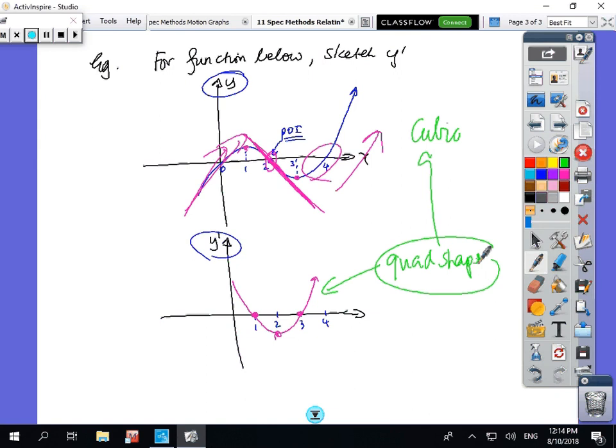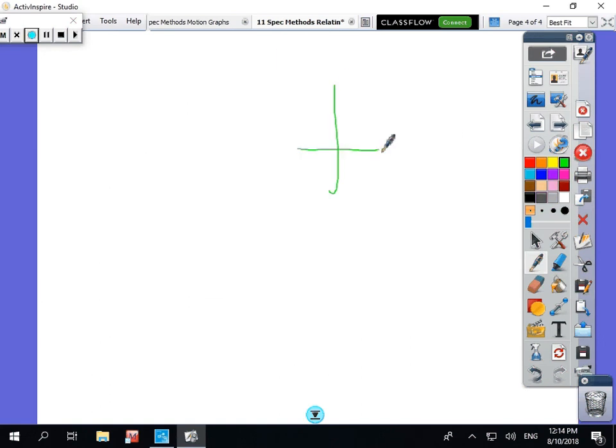When you have y dash, you just add one to the power to get the function. For instance, if y dash is a straight line - this is y dash, it is a straight line - that means it's to the power of one.